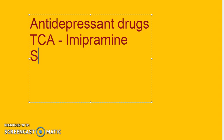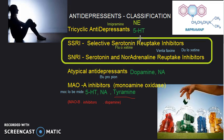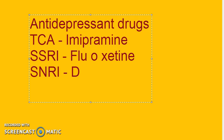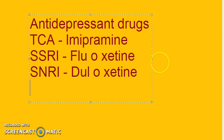SSRIs increase serotonin levels by decreasing reuptake of serotonin. Very important example — fluoxetine. SNRIs are serotonin and noradrenaline reuptake inhibitors; example — duloxetine (remember, it is an SNRI not an SSRI). Another SNRI example is venlafaxine.